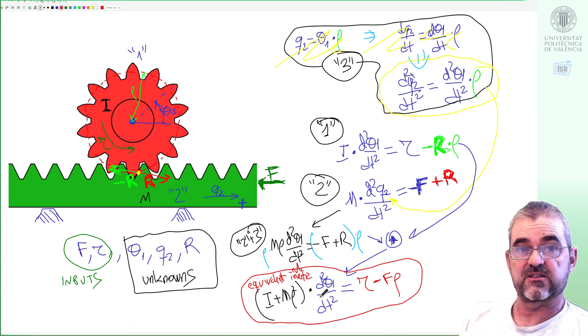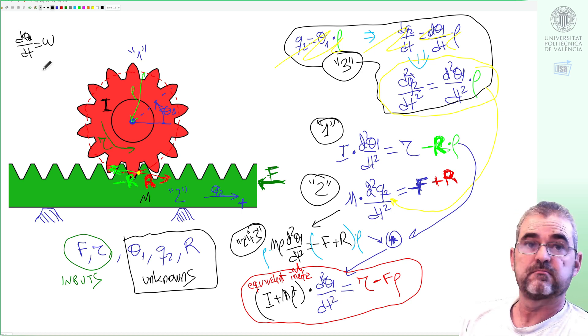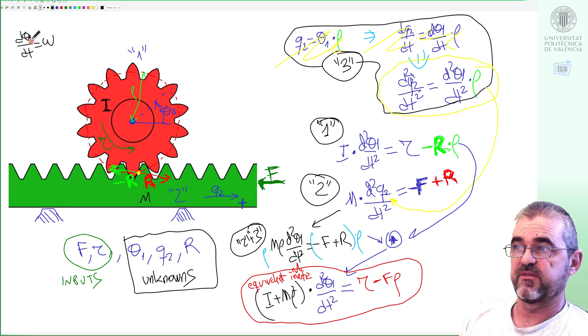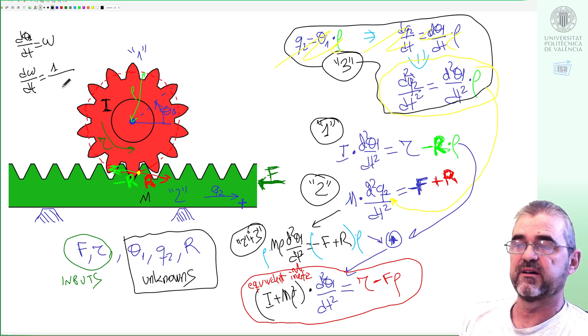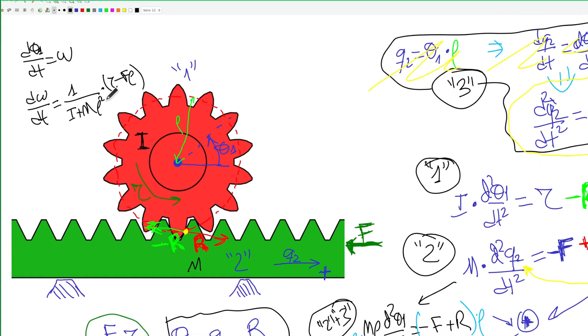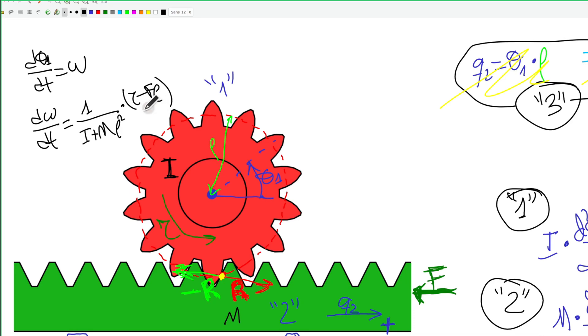We'll express it as two first order differential equations. The derivative of the angular position I will call angular speed omega, and the derivative of the angular speed is one over the equivalent moment of inertia times the equivalent resultant torque which is tau minus f rho.